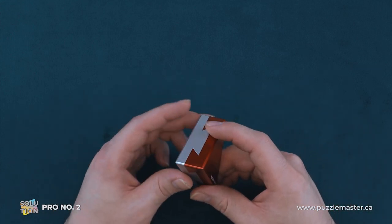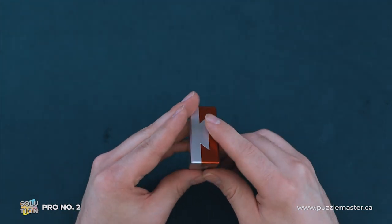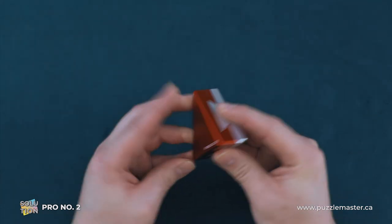So we have one of these impossible dovetail items where we have jointery that seemingly is impossible to remove the two halves.